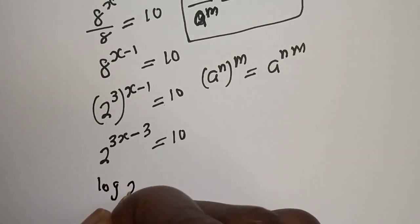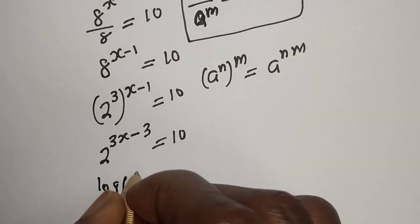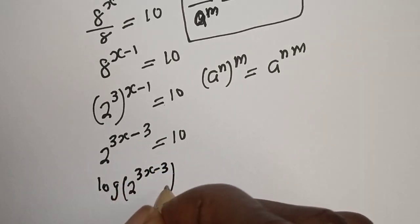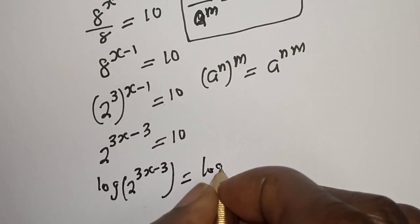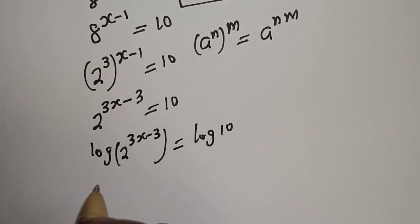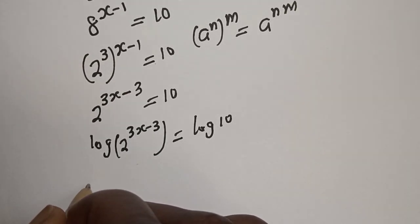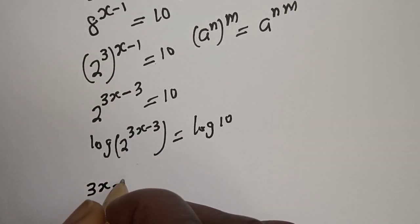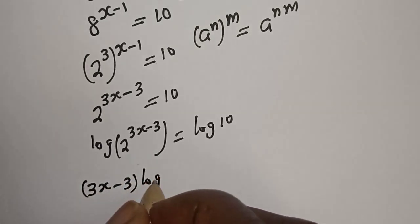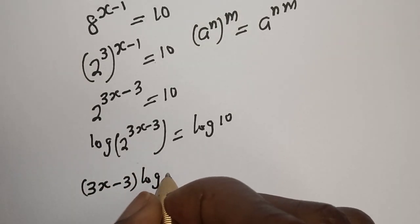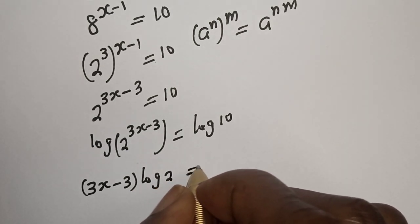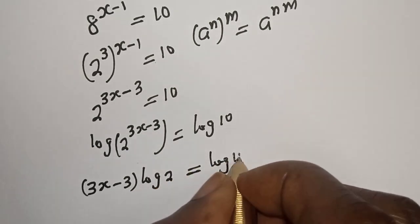Then let's take the log of both sides: log 2 raised to power 3s minus 3 is equal to log 10. Then here is 3s minus 3 times log 2 is equal to log 10.